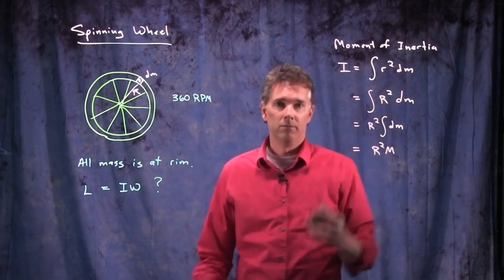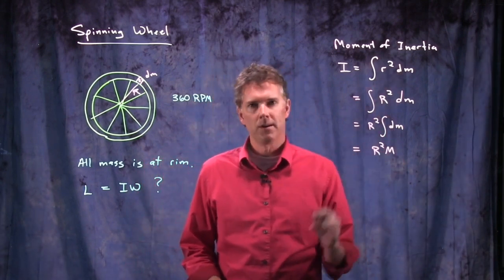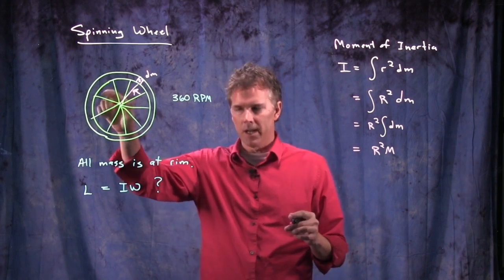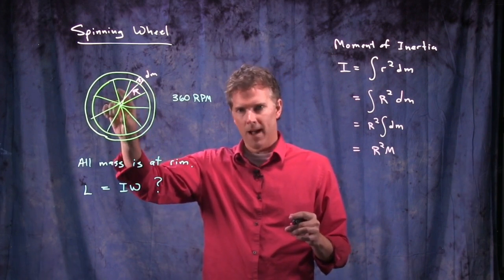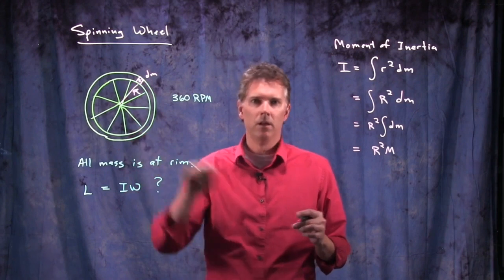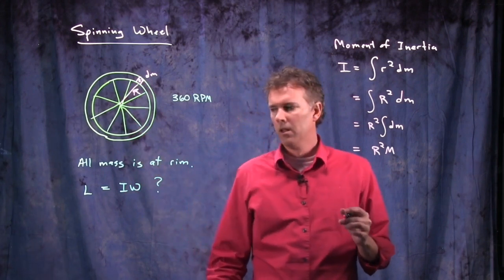And so this whole thing becomes r squared times m. What's the mass of a spinning wheel? It is r squared times m. That's if you're ignoring any mass in the center, no mass in the spokes, all the mass at the rim of the wheel.